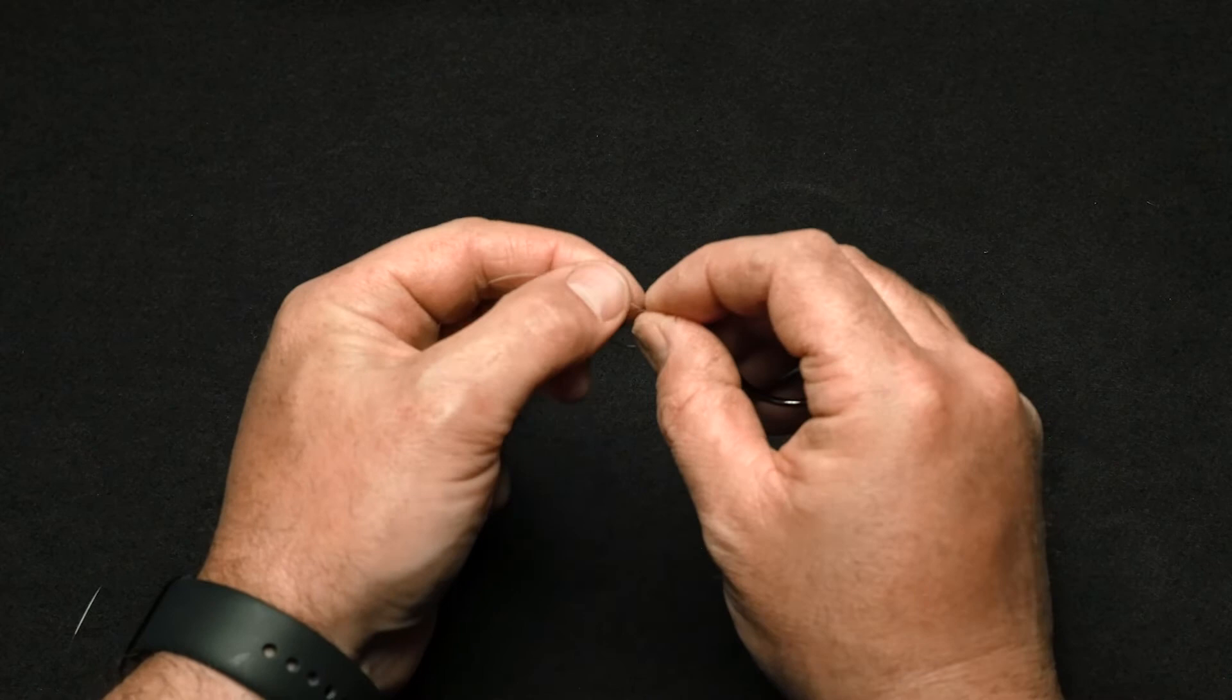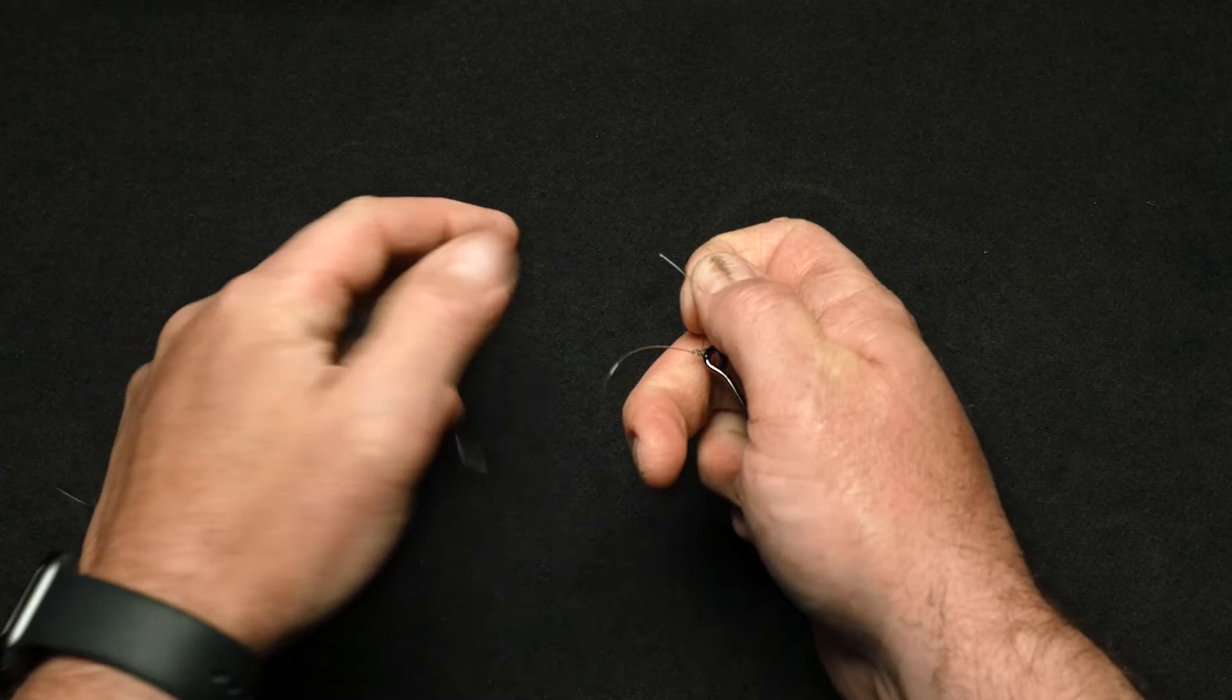Wet the knot and gently pull on the tag end to start drawing the coils together. Pull on the standing line to form a knot with coils. Slide the coil tight against the eye and cut the tag end.